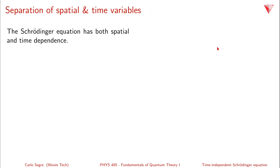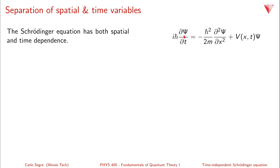The Schrödinger equation has both spatial and time-dependence. If you remember, the Schrödinger equation looks like this: i h-bar partial of Ψ with respect to t is equal to minus h-bar squared over 2m partial squared Ψ with respect to x squared, plus V of x and t times Ψ. This is capital Ψ, so it's a time-dependent solution.